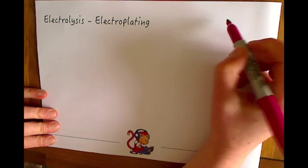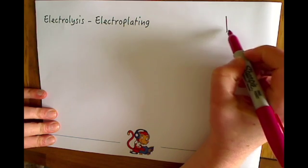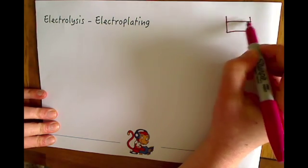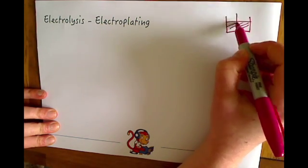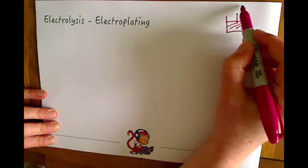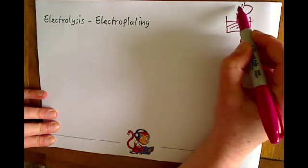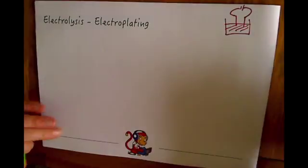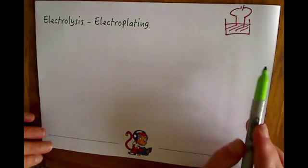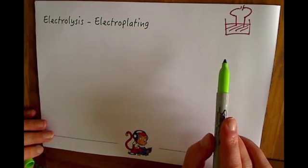So in a normal electrolysis, in a very simple diagram you'll have the electrolyte and then two electrodes sticking out of that and connecting to a power supply. Now all you do in electroplating is change the negative electrode for the object that you want to plate.